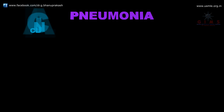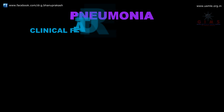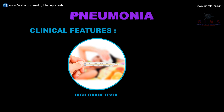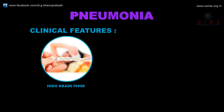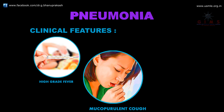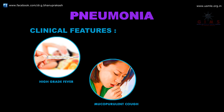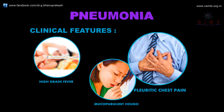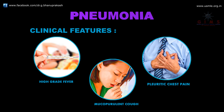Looking at the clinical features of typical pneumonia, it includes an acute onset of high-grade fever and mucopurulent cough, which is associated with pleuritic chest pain.